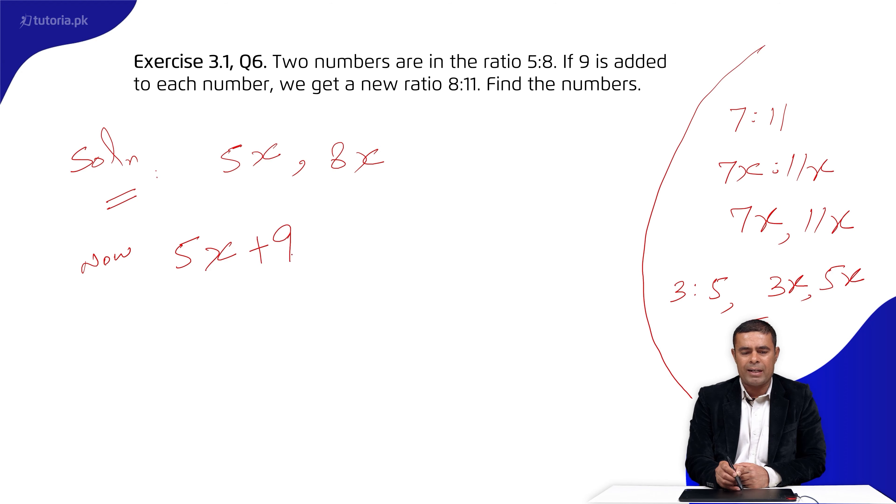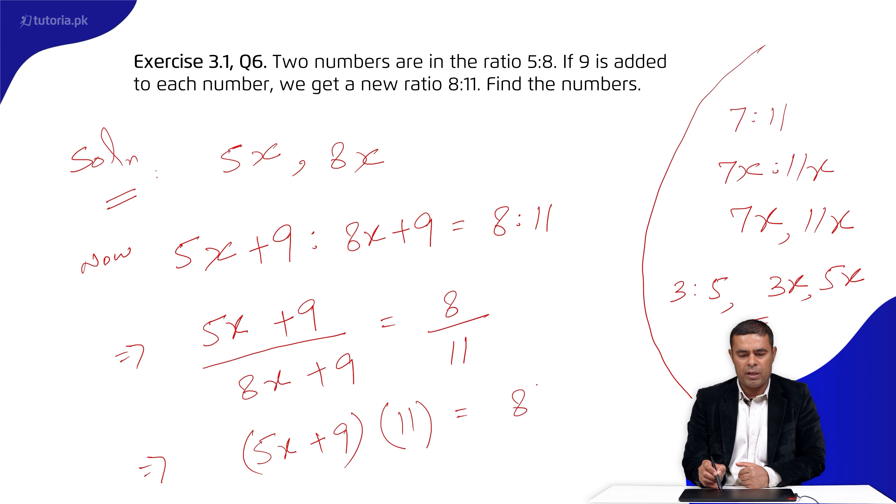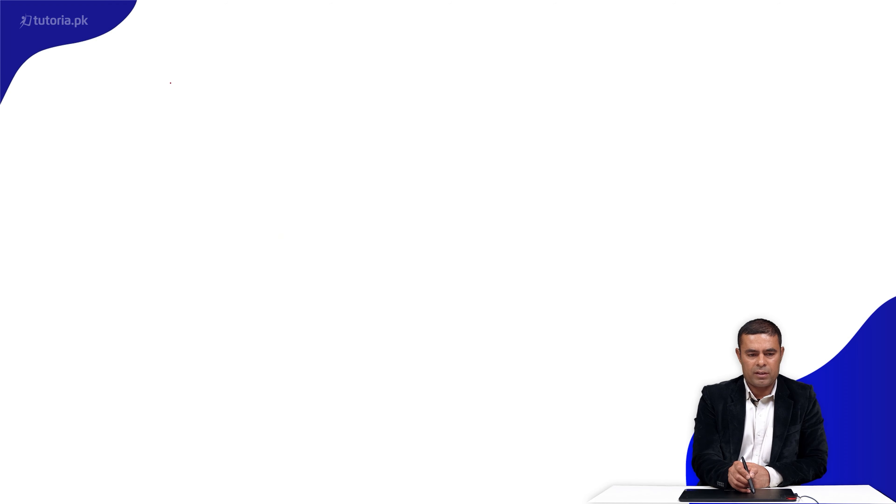Now, the condition given is: if we add 9 to 5x and add 9 to 8x, the new ratio becomes 8:11. So (5x + 9) over (8x + 9) equals 8 over 11.